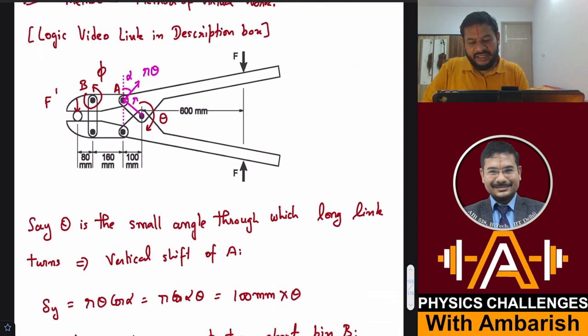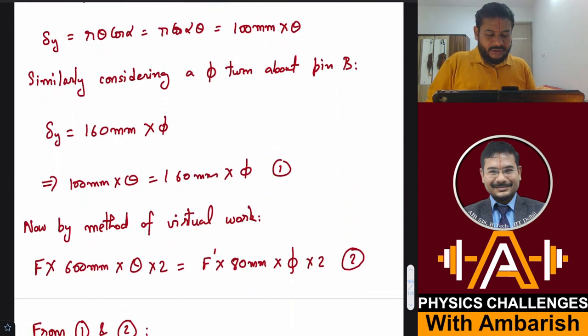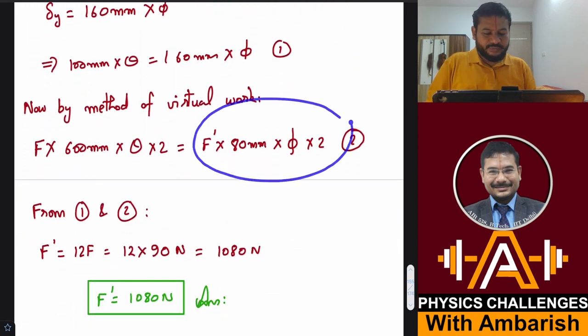This should equal magnitude-wise F dash into 80 mm into phi into 2. Why? See, F dash is acting here and the arm of this about pivot B is 80 mm, so F dash into 80 mm into phi. That is the work done by the upper force, and this should also equal the work done by lower force, and therefore you take the factor of 2.